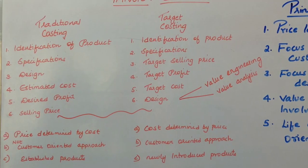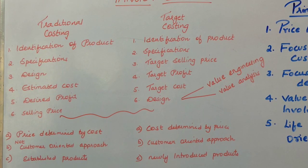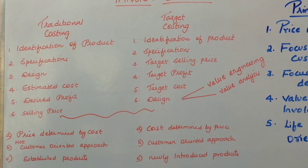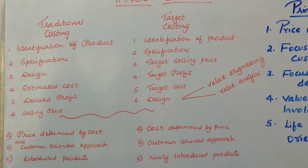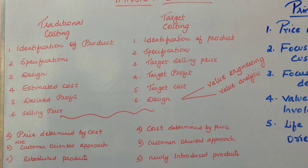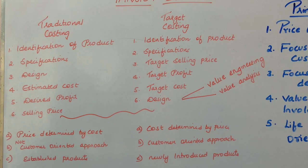Coming to target costing — target costing is the straight opposite of traditional costing. Under target costing, a company identifies a product and decides the specifications, that is, what features are needed. Once the features are decided, the next thing the company does is decide the target selling price.